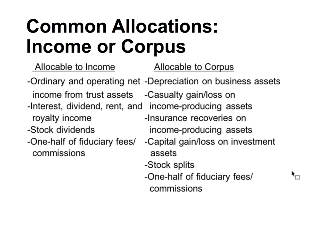Items allocable to corpus include depreciation on business assets, casualty gains and losses, insurance recoveries, capital gain or loss on investments, stock splits, and one-half of fiduciary fees and commissions. So one-half of the fiduciary fees and commissions comes from allocable income and one-half from corpus.